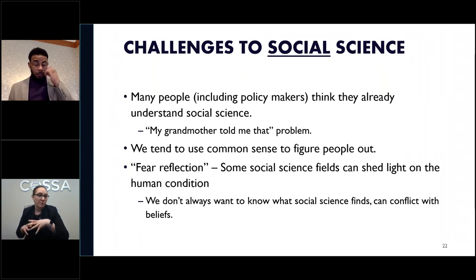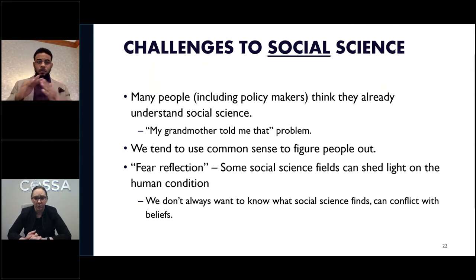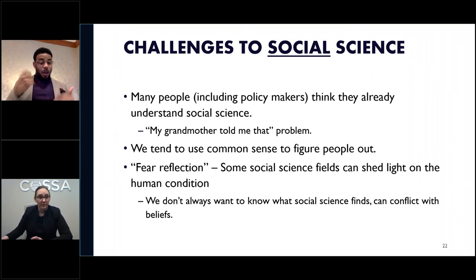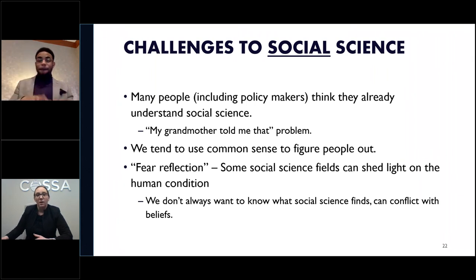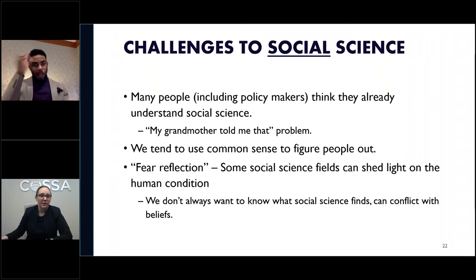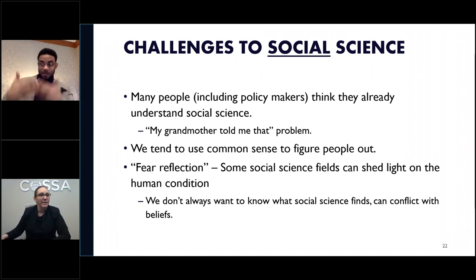There are also challenges specific to the social science community. Many people, including policymakers, think they already understand social science — the 'my grandmother told me' problem: why is this scientific, why do we need to study it, why spend taxpayer dollars on it? Sometimes it's not that policymakers oppose the science itself, but they don't see it as a function of the federal government to fund it. Social science challenges in Congress typically fall into three types: funding cuts to an agency or specific programs; policy riders directing agencies to do something against the best interest of research; and negative or misleading statements on the House or Senate floor.